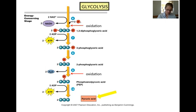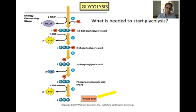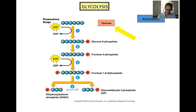You will notice that two reductions occurred in these last five steps as NAD+ is reduced to NADH and water is produced. Oxidations occur simultaneously with the reductions. Notice that ATP is generated during the energy conserving stage as well. In order to start glycolysis, glucose, a six-carbon molecule, is needed. Additionally, two molecules of ATP are needed for the preparatory stage of glycolysis. Pause this video and take a minute to look at the animation of glycolysis that is located on the portal.